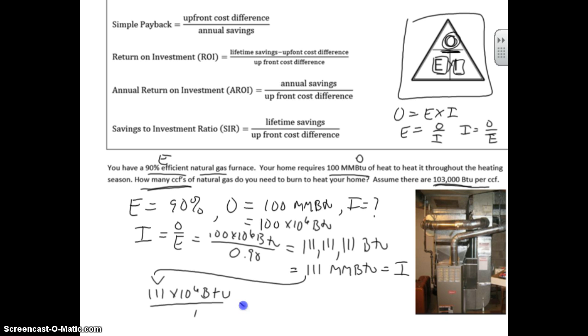We're going to convert this. We know our conversion factor is 1 CCF equals 103,000 BTUs. That gives us a total of 1,078 CCFs of natural gas.